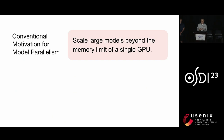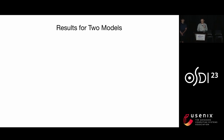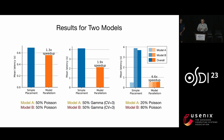From the previous example, we can see that besides the conventional motivation to scale large models, for deep learning serving we can adopt model parallelism for the statistical multiplexing of GPUs when serving multiple models, even if a single model can fit into a single GPU. We validated this with transformers on actual GPUs with different request distributions. Even for the most uniform distribution where each model's request follows an equal Poisson process, model parallelism can achieve a 1.3x speedup, and for more bursty or uneven requests, it can provide an even larger speedup.